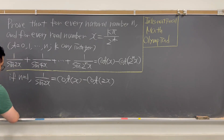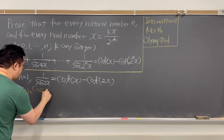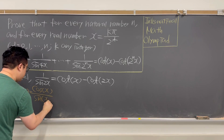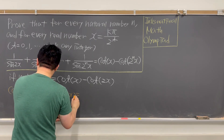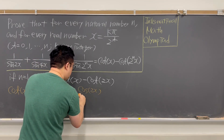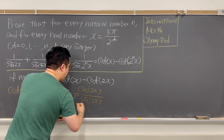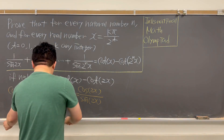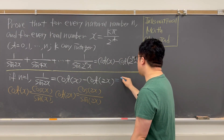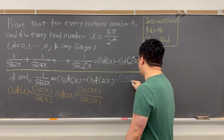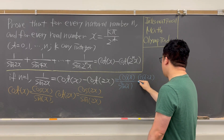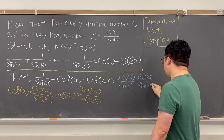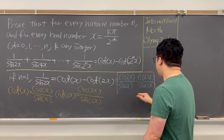We already have the formula for cotangent x: cotangent x equals cosine x over sin x, which means cotangent(2x) equals cosine(2x) over sin(2x). So the right-hand side becomes cosine x over sin x minus cosine(2x) over sin(2x).